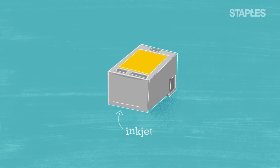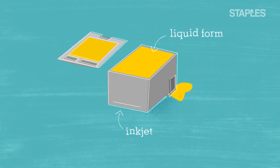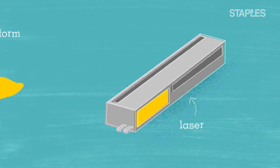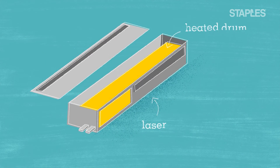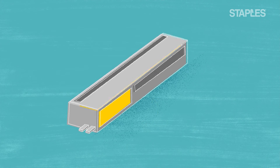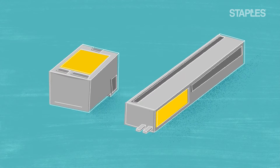Inkjet printers have cartridges containing the colour in a liquid form and tend to be smaller and cheaper than laser printer cartridges, which use a heated drum to fuse their coloured powder onto each printed page. But don't worry too much, both versions are recyclable.